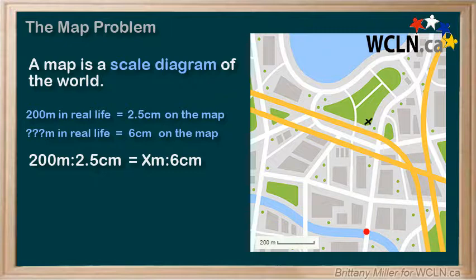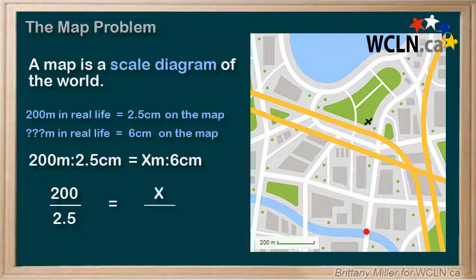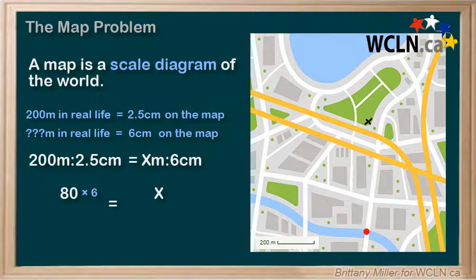We can set this up similarly to the dog question from the last video. 200 meters over 2.5 centimeters equals x meters over 6 centimeters. We want to get x by itself. To do this, we multiply both sides by 6. 200 divided by 2.5 is equal to 80.